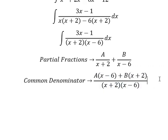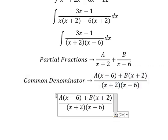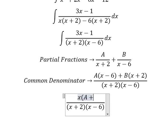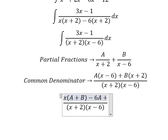Now we need to arrange based on the terms of x. About x we have A plus B. About the number we have negative 6A plus 2B.